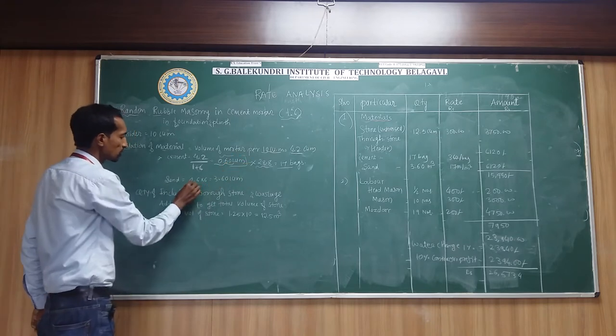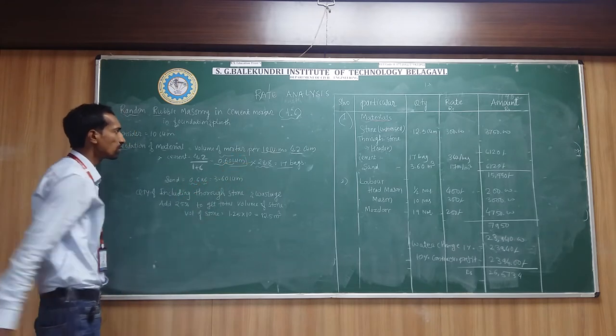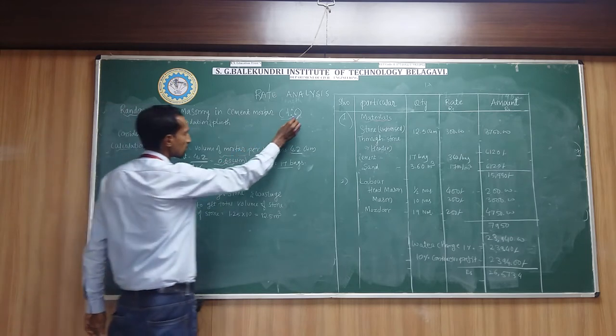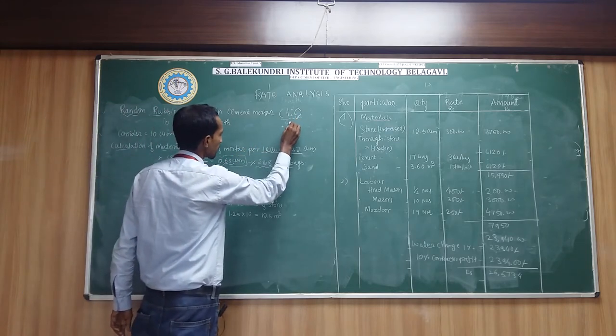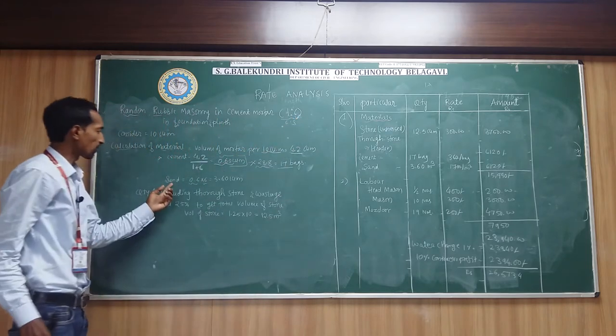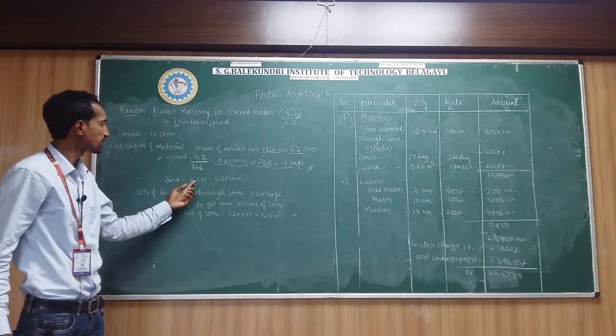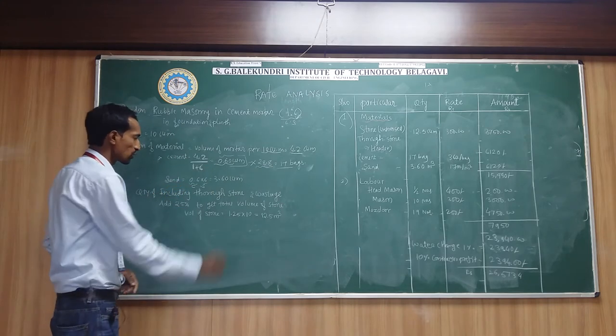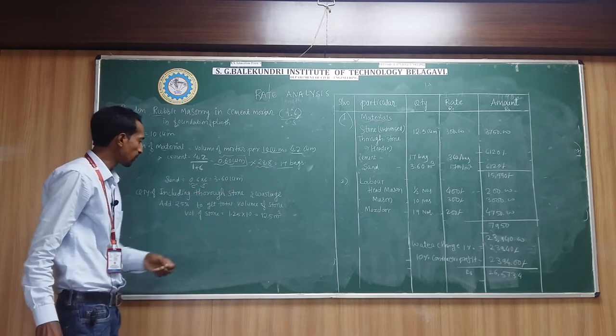Cement is 0.6. You multiply 6 times. This is cement and this is sand. To calculate the sand you multiply 6 times of the cement here. This is cement and sand ratio. We will get 3.6 cubic meter.